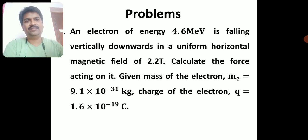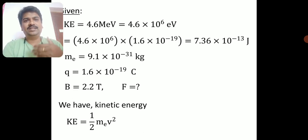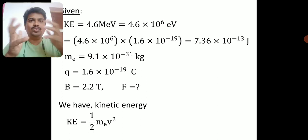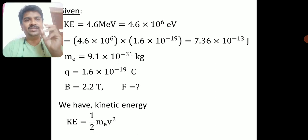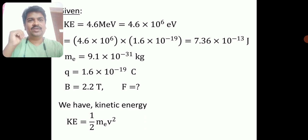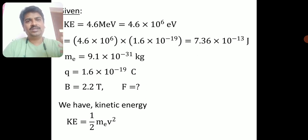First list out all the data given, then use the relevant formula. Energy is 4.6 MeV = 4.6 × 10⁶ eV. To convert to joules, multiply by the charge of the electron: 4.6 × 10⁶ × 1.6 × 10⁻¹⁹, which gives 7.36 × 10⁻¹³ joules.